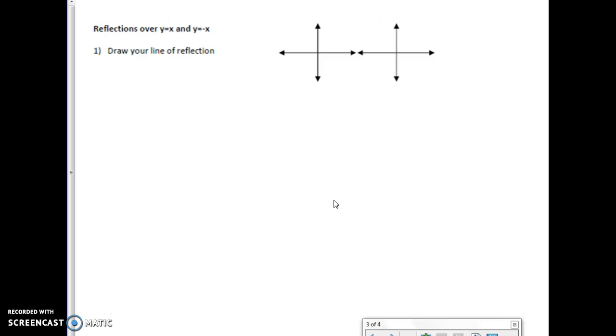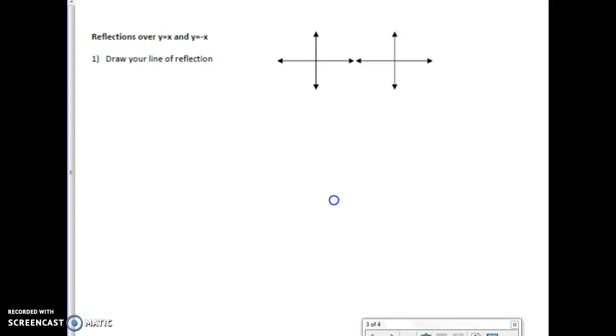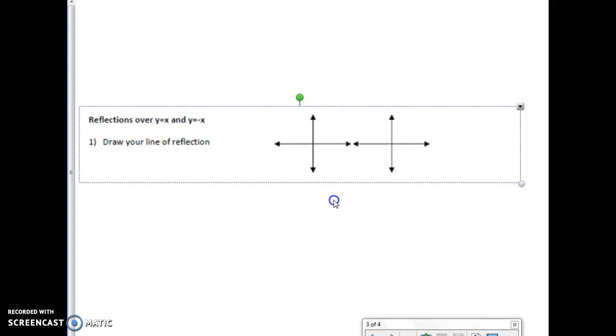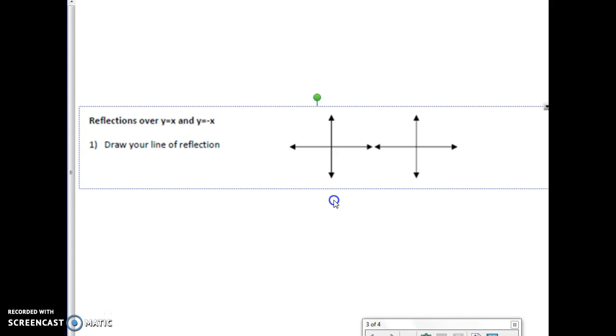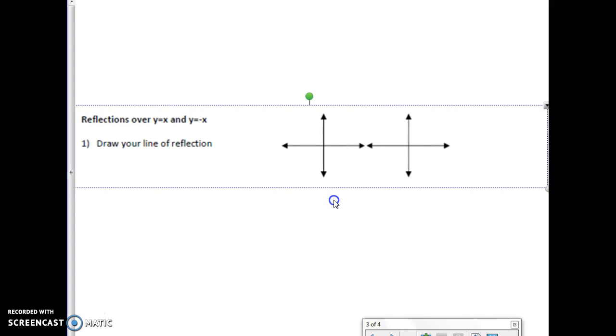Alright guys, so you talked about the idea of reflecting over horizontal and vertical lines, and today this next set is dealing with reflecting over diagonal lines. So let's look at diagonal lines. There's two types that we could have.